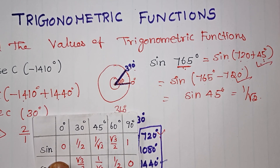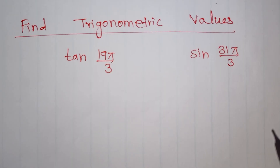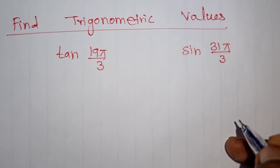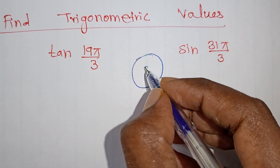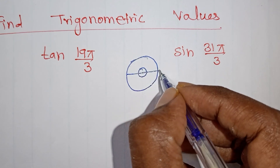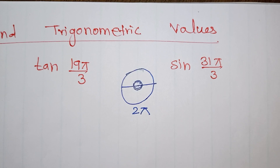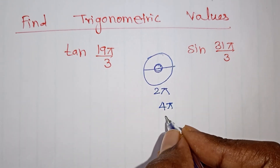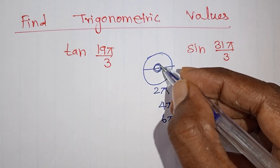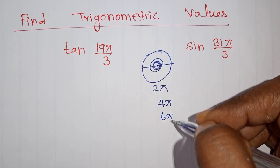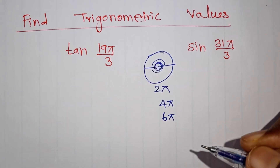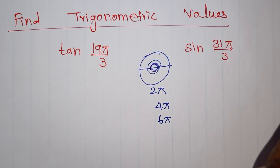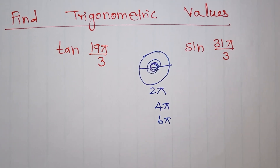This was degree measure. The same method applies for radian measure — the value is the same. Now in radian measure, 360 degrees is actually 2 pi. One complete radian measure is 2 pi. So 2 pi is a complete circle. Two circles is 4 pi. Three circles is 6 pi. The complete circle multiples are 2 pi, 4 pi, 6 pi, 8 pi, 10 pi — all even multiples of pi. These are complete angles.